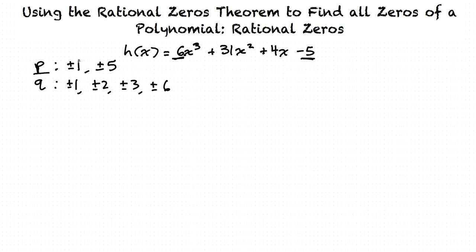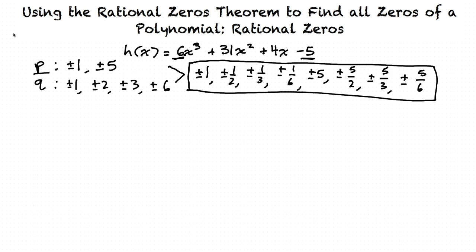We'll start with plus or minus 1 written over all the q terms, and then plus or minus 5 over all the q terms. So we have plus or minus 1, plus or minus 1 half, plus or minus 1 third, plus or minus 1 sixth, plus or minus 5, plus or minus 5 halves, plus or minus 5 thirds, and plus or minus 5 sixths. So we have 16 possible rational zeros for h of x.